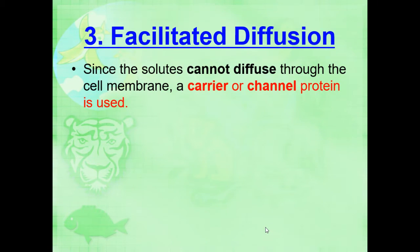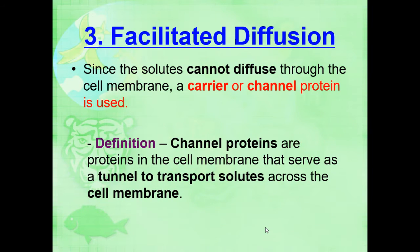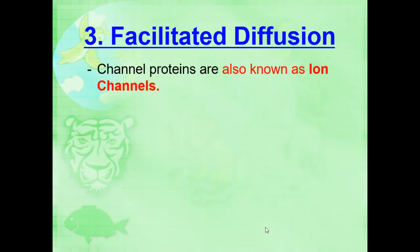Since the solutes cannot diffuse through the cell membrane, a carrier protein or a channel protein is used. Channel proteins are proteins in a cell membrane that serve as a tunnel to transport solutes across the cell membrane. Channel proteins are also known as ion channels.